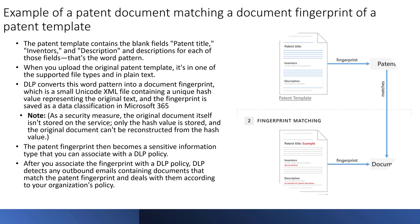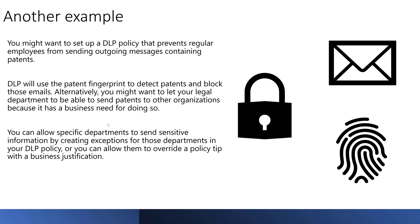The patent fingerprint then becomes a sensitive information type that you can associate with a DLP policy. After you associate the fingerprint with a DLP policy, DLP detects any outbound emails containing documents that match that fingerprint and deals with them according to your policy. For example, you might want to set up a DLP policy that prevents regular employees from sending outgoing messages containing patents, while allowing your legal department to send those patents to other organizations because it has a business justification. You can create an exception process for those departments in the DLP policy and allow them to override with a policy tip requiring business justification.